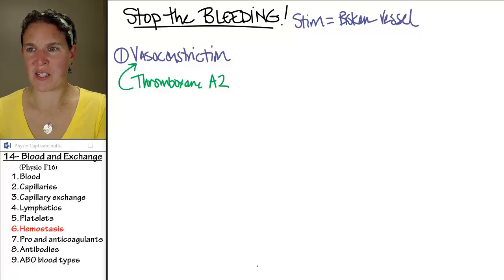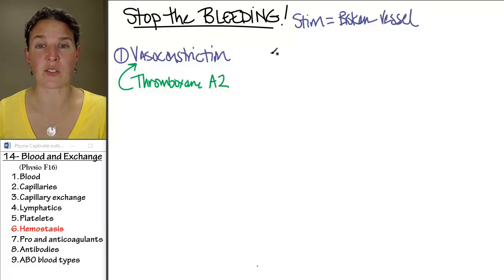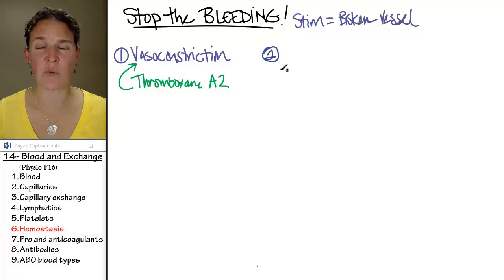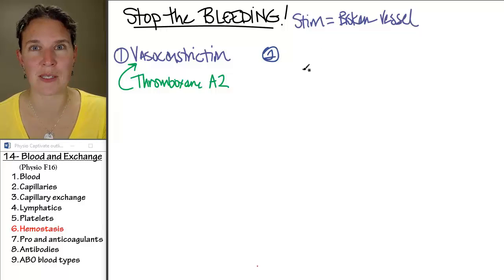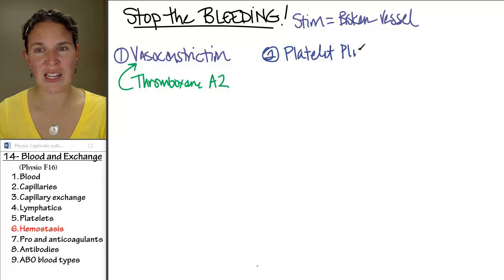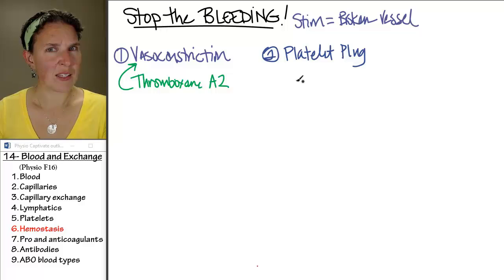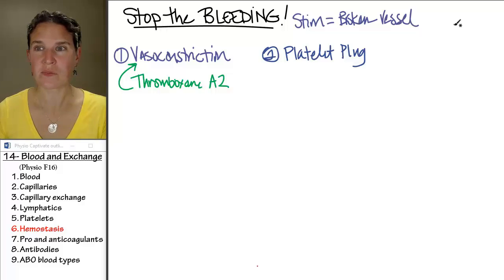There are a bunch of other chemicals produced — this is the Cliff Notes version of hemostasis. I'm numbering these things, but you have to realize this is all happening simultaneously. So erase your numbers. The second thing that happens simultaneously to everything else is the formation of a platelet plug. This is not a clot — it's a plug of platelets, and this broken blood vessel stimulates the formation of a platelet plug as well.